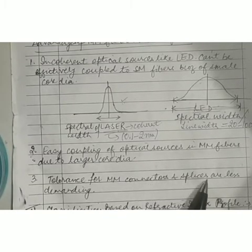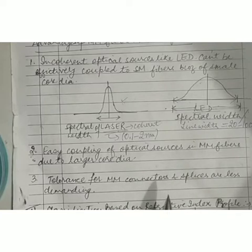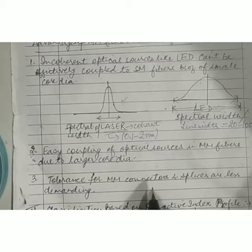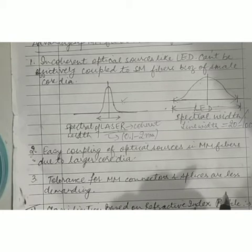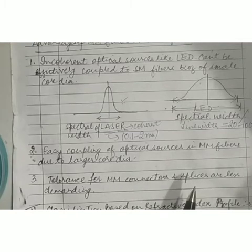Connectors and splices are optical components used to join two fibers together. The difference between them is that connectors are a temporary way of connecting two fibers — you can connect or dismantle the two fiber pieces using connectors easily whenever required. Whereas a splice is a permanent way of connecting the fibers together, and the method of joining is known as splicing.